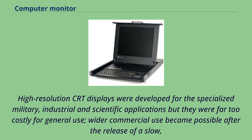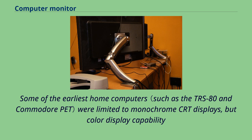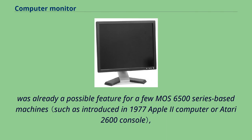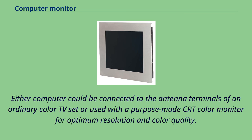High-resolution CRT displays were developed for specialized military, industrial and scientific applications but were far too costly for general use. Wider commercial use became possible after the release of a slow but affordable Tektronix 4010 terminal in 1972. Some of the earliest home computers were limited to monochrome CRT displays, but color display capability was already a feature for a few MOS 6500 series based machines, and color output was a speciality of the more graphically sophisticated Atari 800 computer introduced in 1979. Either computer could be connected to an ordinary color TV set or used with a purpose-made CRT color monitor for optimum resolution and color quality.